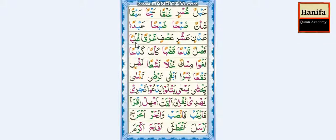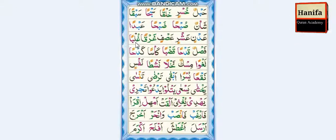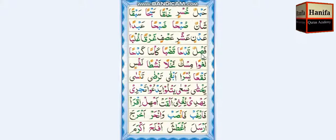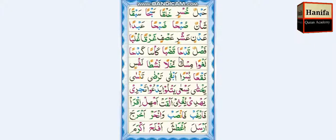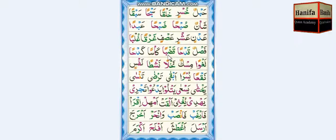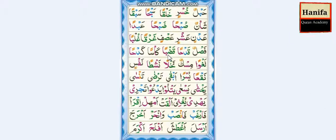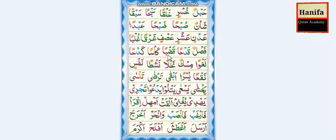Ghayn, Lam, Damma — ghul. Ba, Fathatan — ban. Ghul-ban. Fa, Fatha — fas. Lam, Dammatan — lun. Fas-lun. Qaf, Dal, Fatha — qad. Ha, Fathatan — han. Qad-han. Fas-qan.